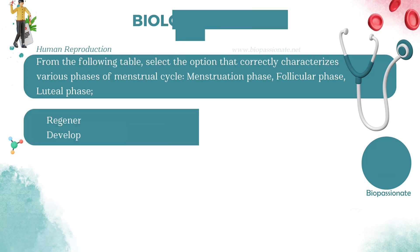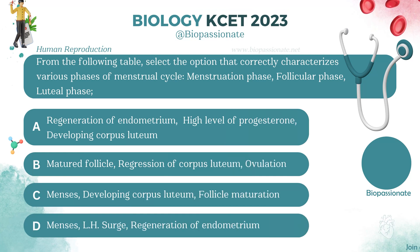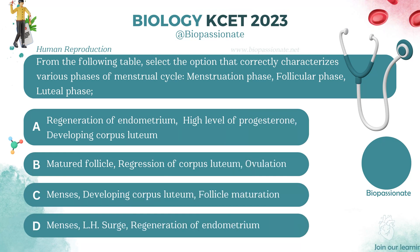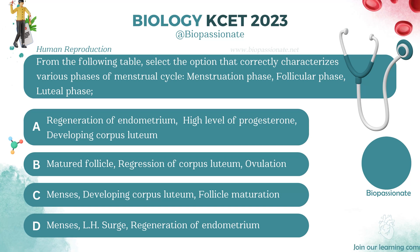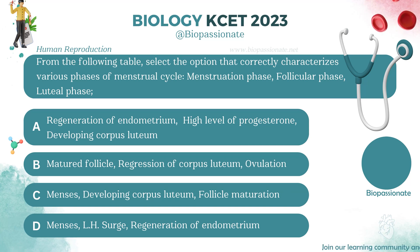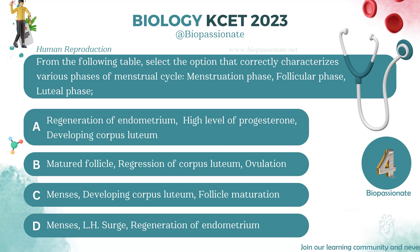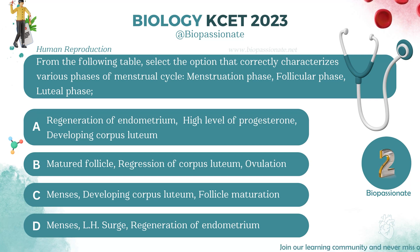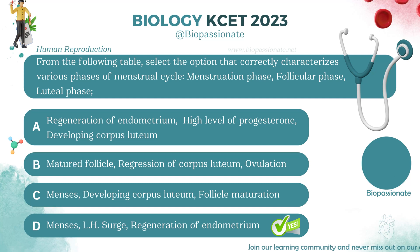From the following table, select the option that correctly characterizes the various phases of the menstrual cycle: menstruation phase, follicular phase, and luteal phase. Answer: Option D.